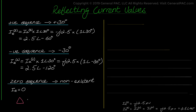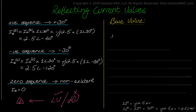To clarify, we again state that we will have zero-sequence current on the low-voltage side but not on the high-voltage side for this type of transformer connection. We need to use the base values to convert the per unit quantities to ampere quantities.